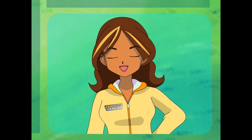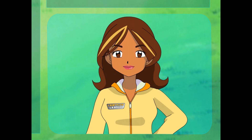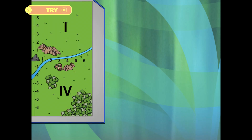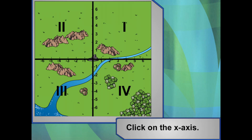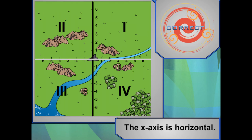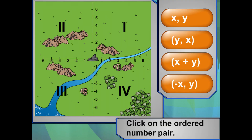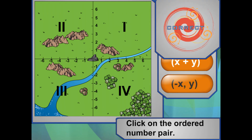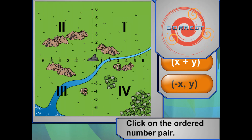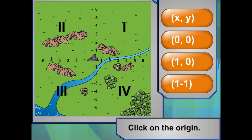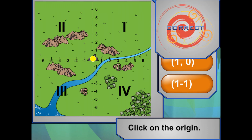Shh! I think I heard something. Let's try a couple before you set out on your own — we don't want you to take a wrong turn. Good idea. Let's find the various places Professor Oak has marked on our grid map. Let's review. Click on the X axis. That's right! The X axis is horizontal. Now click on the Y axis. Correct! The Y axis is vertical. Now, which one of these is an ordered number pair? That's right! Ordered pairs are always written with the X coordinate, a comma, then the Y coordinate, all in parentheses. Which one of these ordered number pairs is the origin? That's right! The origin is where the two axes meet.